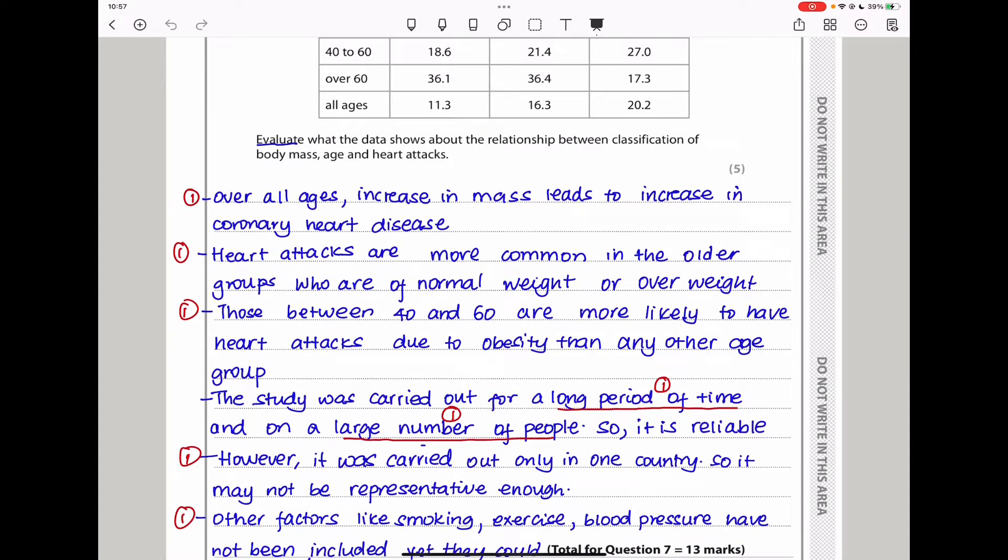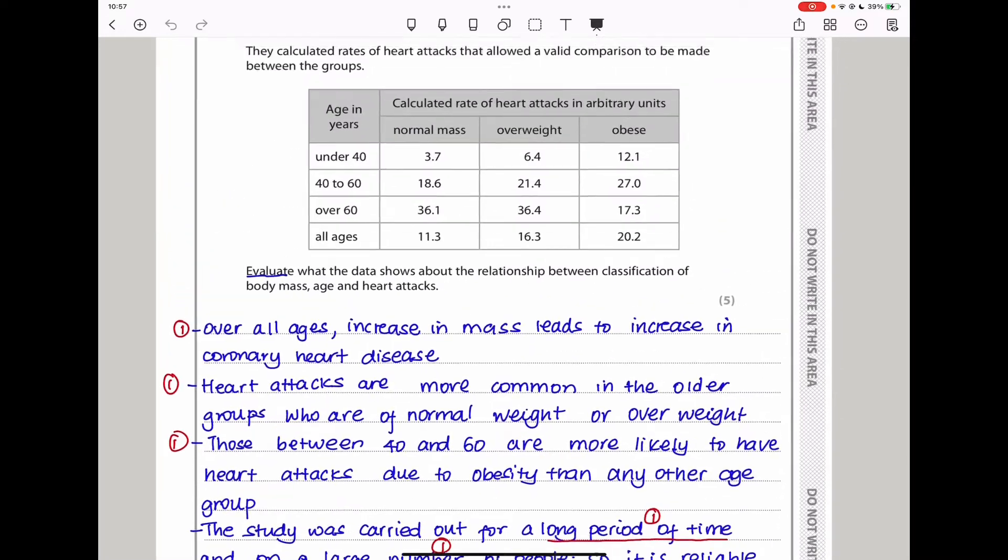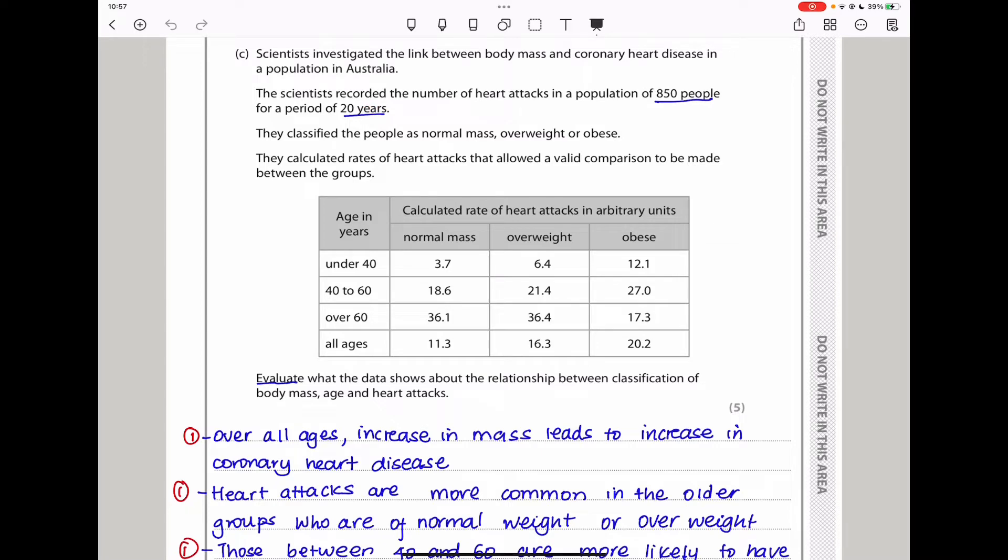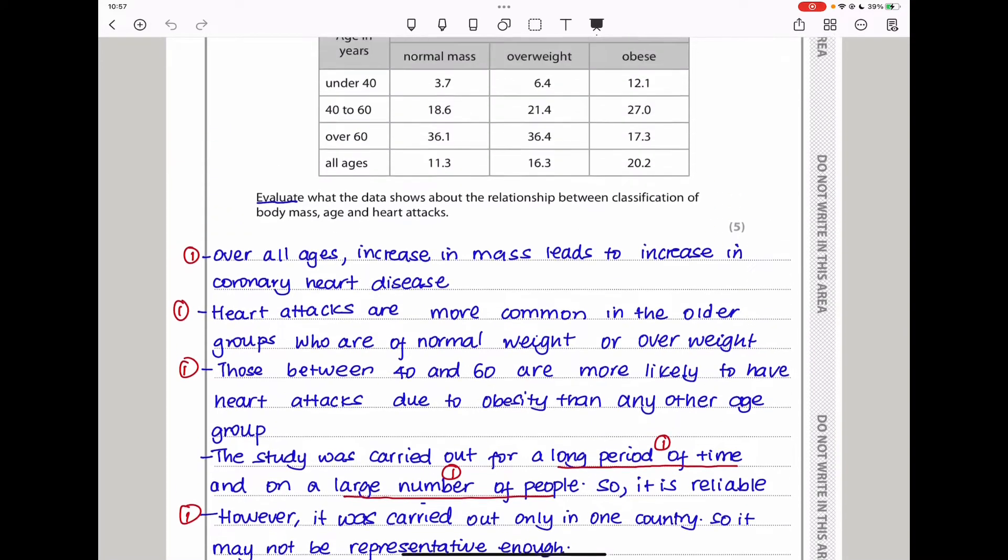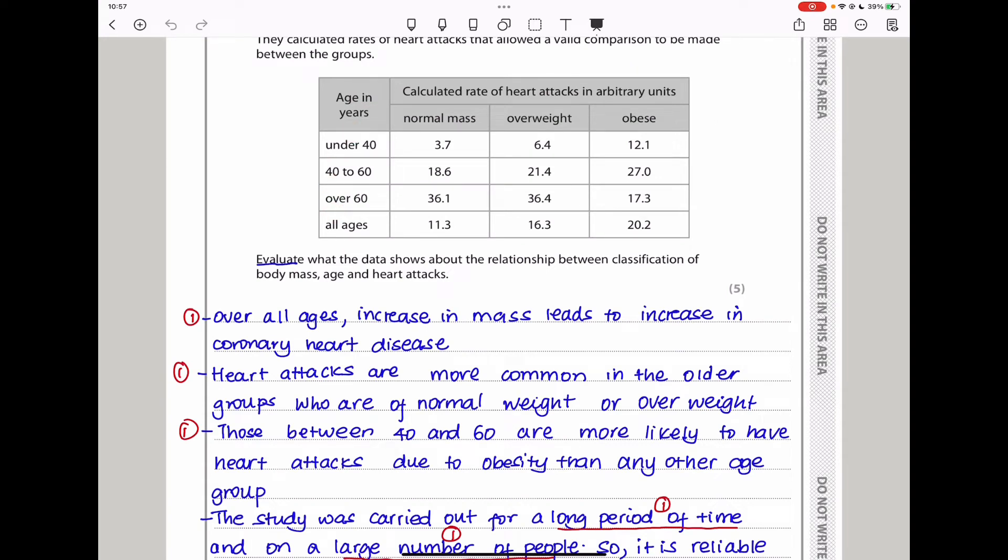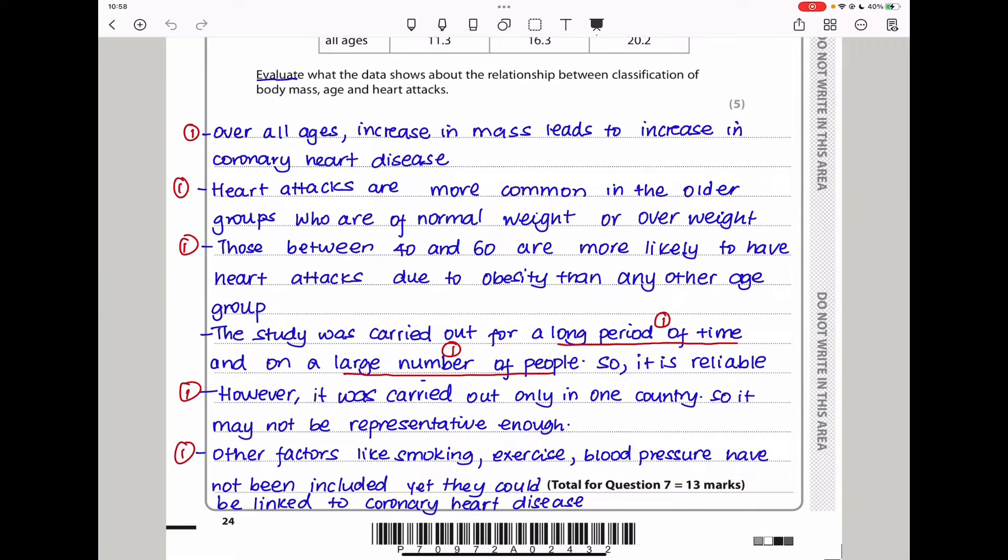I also said, the study was carried out for a long period of time and on a large number of people, so it can be reliable. It was carried out for 20 years. That is a long-term study, so it is reliable. And the people were 850, so we can believe the results. However, it was carried out only in one country, Australia, so it may not be representative enough for other people. I also said some of the factors were not included. They didn't give us the other risk factors, like how do people exercise, are they smokers? Because heart attacks or coronary heart disease is not only caused by body mass. So I said other factors like smoking, exercise, blood pressure have not been included, yet they could be linked to coronary heart disease as well.